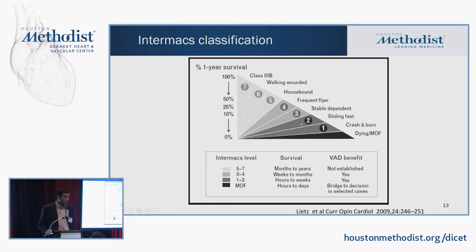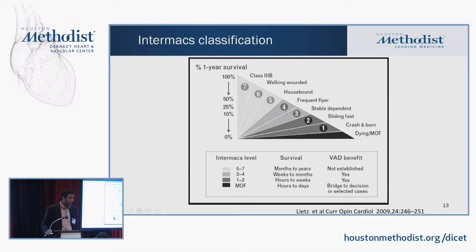INTERMACS 2 patients are on inotropes but not yet optimized. INTERMACS 3 patients are on inotropes but stable and at home. These patients face limited survival — INTERMACS 3 has a 12-month mortality of greater than 75%, and INTERMACS 4 has a 12-month survival of about 50%. This classification has been really useful in determining whether durable LVAD support would be beneficial as you go up the INTERMACS scale.